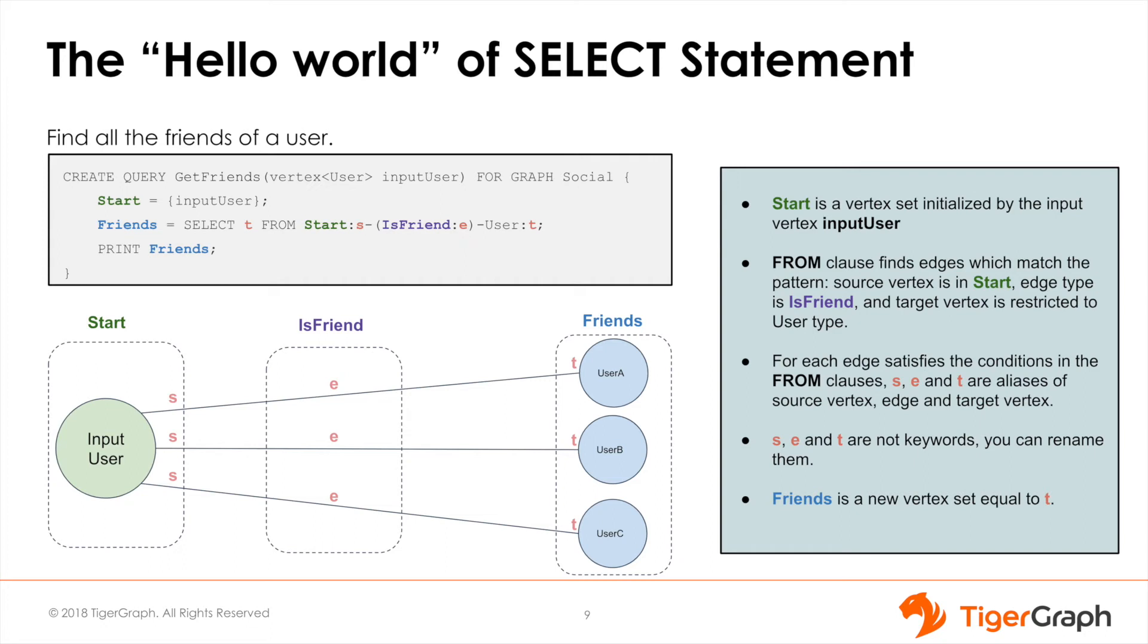S is used to denote all the start vertices, E represents all the edge instances, and T represents all the target vertices. So in our case, user A, B, and C are all selected.